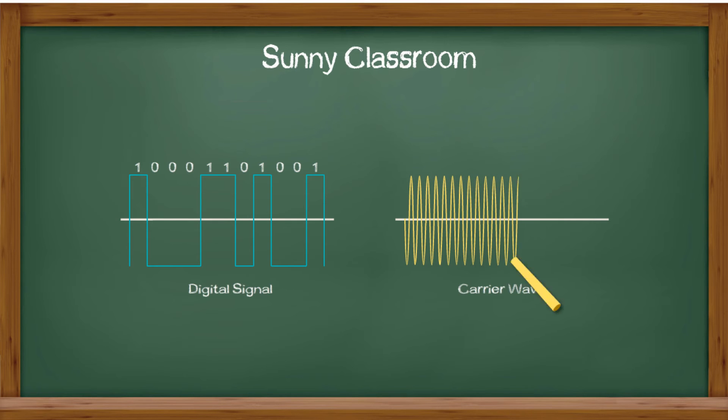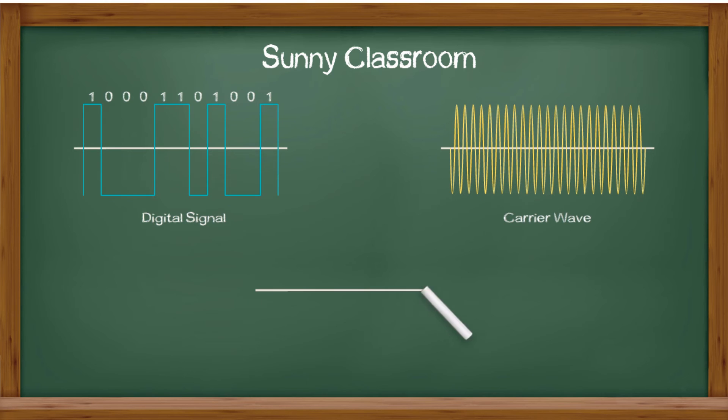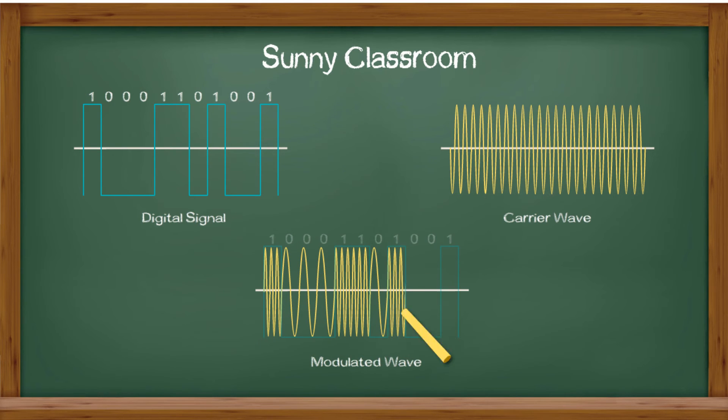Here is another example. On the left side are digital signals. On the right side is the carrier wave. The modulated wave demonstrates how digital signals modulate or change the carrier wave.